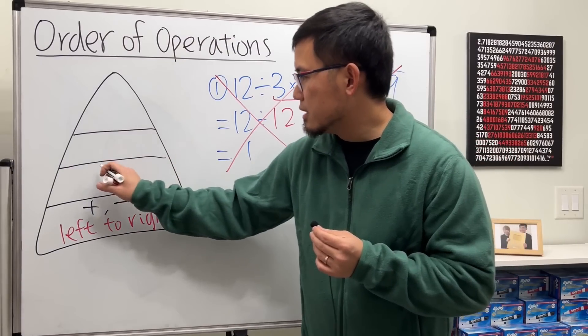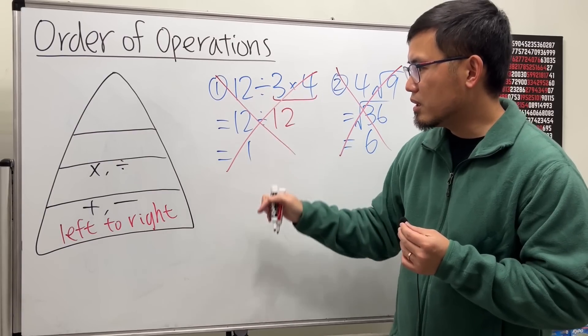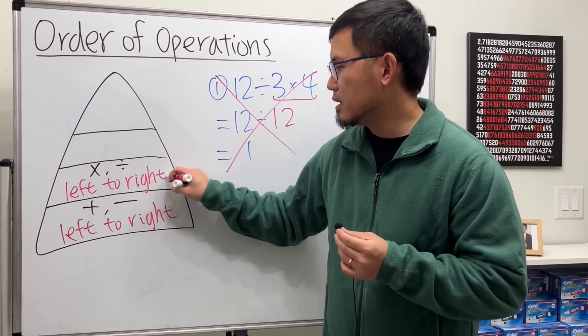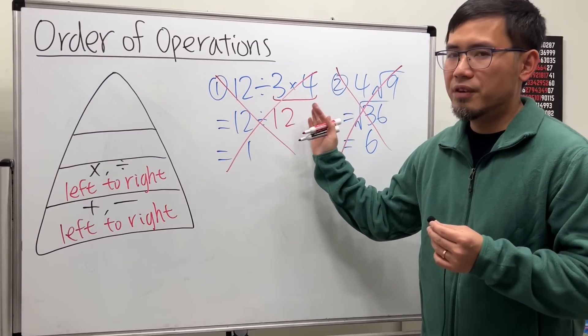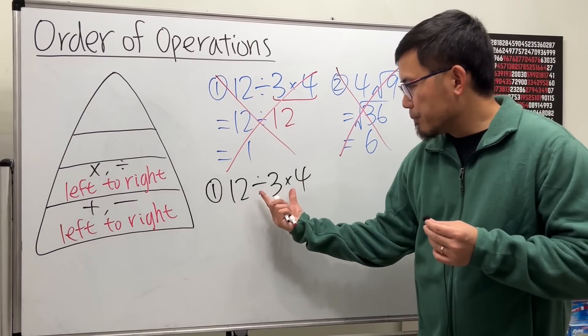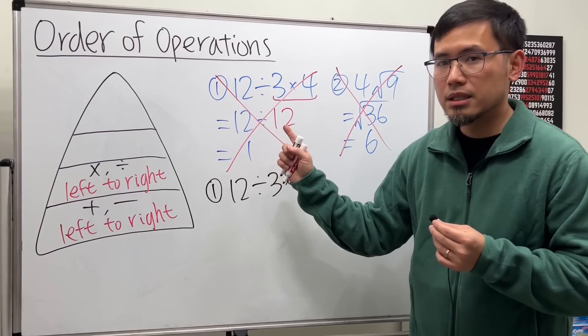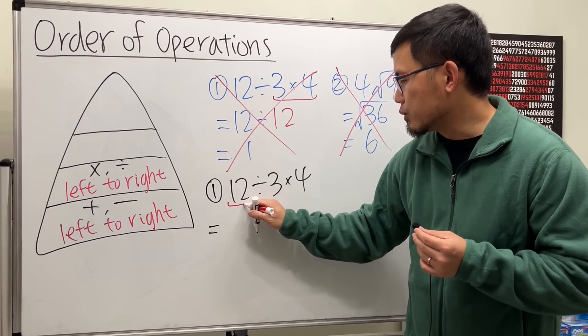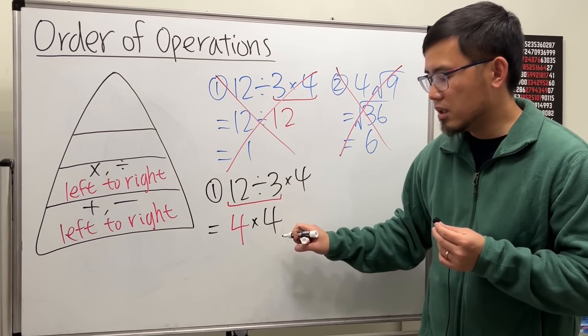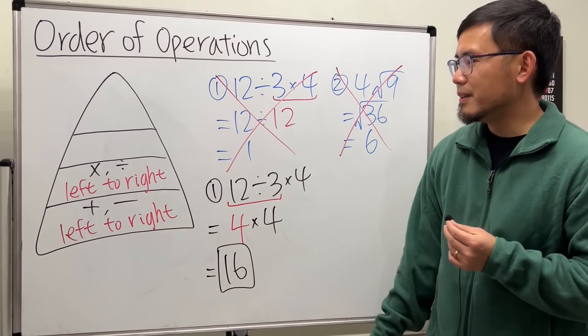And then the level above it is multiplication and also division. When you see them together in the question, again you're supposed to just do it from left to right. So just real quick, let me fix this. If we have 12 divided by 3 times 4, both of these operations are on the same level, so we just proceed from left to right, which means we do 12 divided by 3 first, that gives us 4, then bring down times 4. 4 times 4 we get 16, and this is the correct answer.